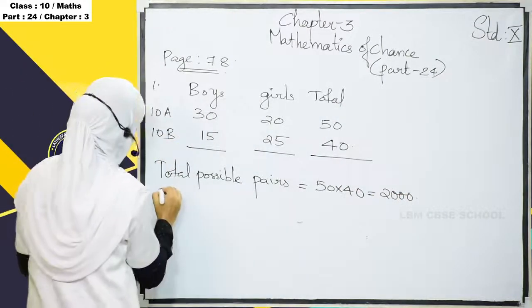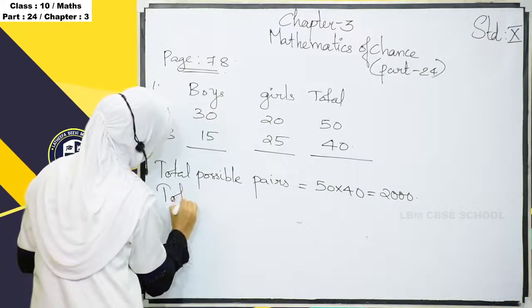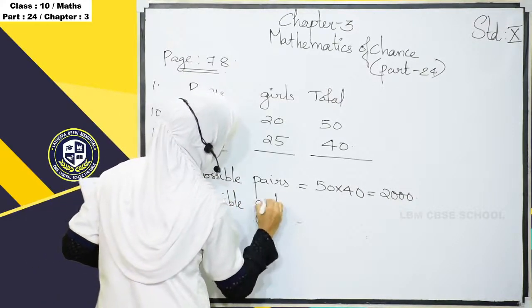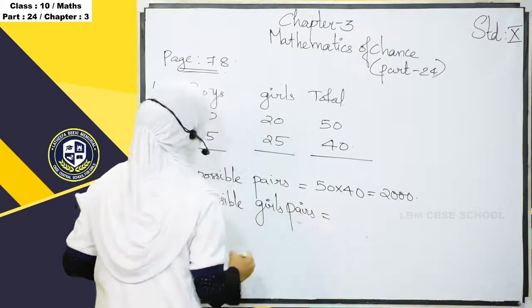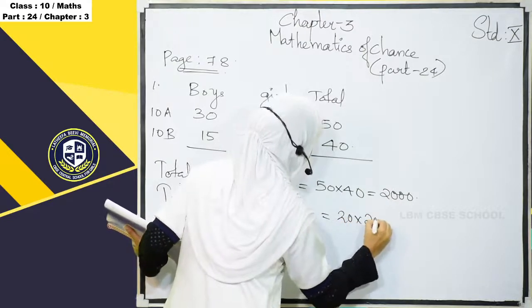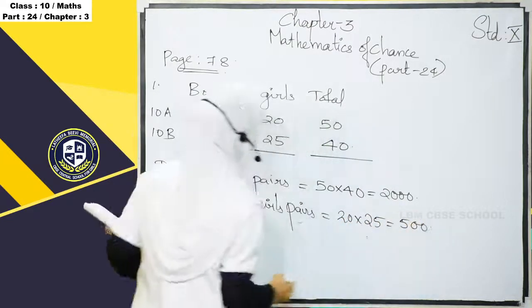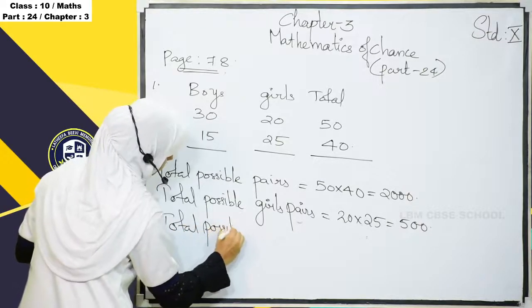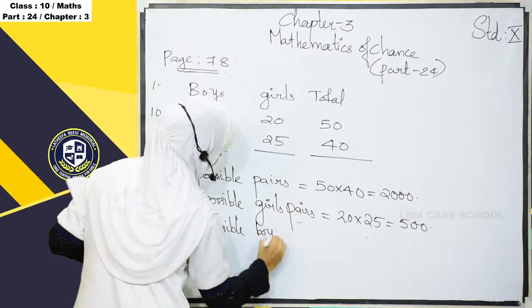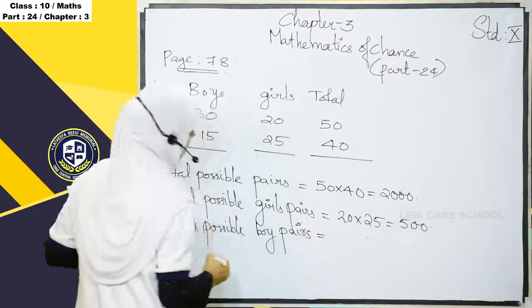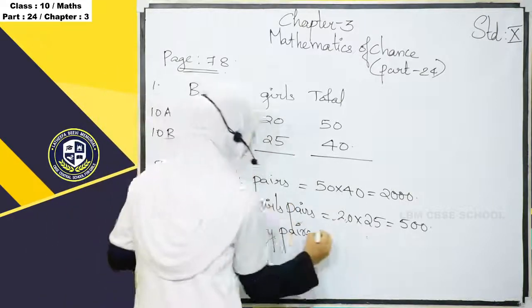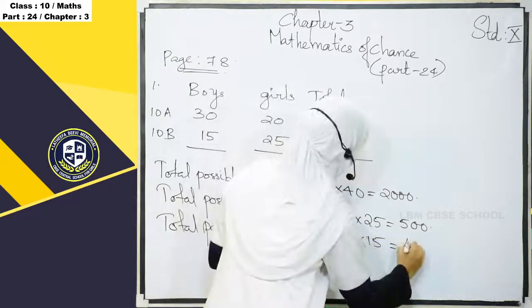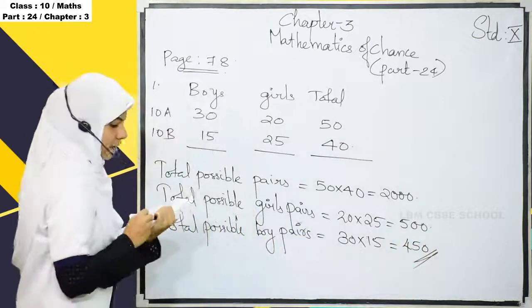Total possible girl pairs is 20 into 25, that is 500. And total possible boy pairs is equal to 30 into 15, which is 450.